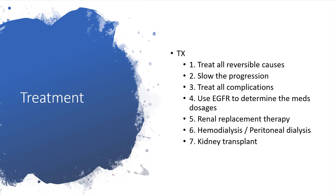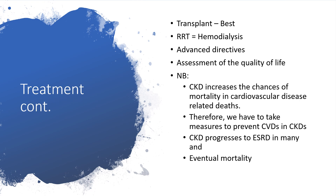On treatment: generally, treat all reversible causes after thorough diagnostic investigations. The target is to slow down progression and treat all possible complications. GFR will be used to determine the type of medications and dosages. Renal replacement therapy — whether hemodialysis or peritoneal dialysis — and kidney transplant, which is the best treatment option available.